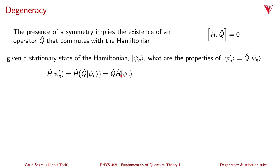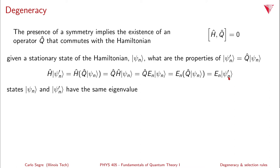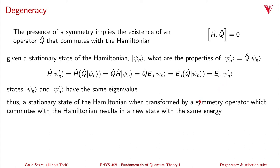Of course, psi sub n is an eigenfunction of the Hamiltonian with eigenvalue E sub n. So you get Q applied to E sub n psi sub n. But E sub n is just a scalar, so you can pull it through, and we get E sub n times Q applied to psi sub n, which is E sub n times psi prime sub n. So this says that the states psi sub n and psi prime sub n have the same eigenvalue.